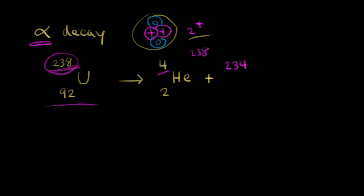In terms of charge, charge is also conserved. On the left, I have 92 protons — 92 positive charges. I need 92 positive charges on the right. We already have two positive charges from our alpha particle, so we need 90 more, meaning an atomic number of 90. Looking that up on the periodic table, atomic number 90 is thorium. So thorium-234 is our other product.